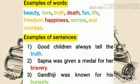Some examples: beauty, love, truth, death, fun, life, freedom, happiness, sorrow and courage. These words are all called abstract nouns. Examples of sentences. First one: Good children always tell the truth. Second one: Sapna was given a medal for her bravery. Third one: Gandhiji was known for his honesty. Here, 'truth,' 'bravery,' and 'honesty' — these words are called abstract nouns.